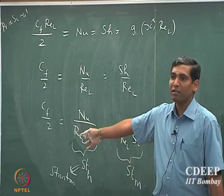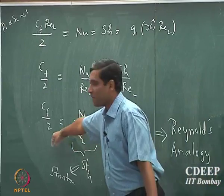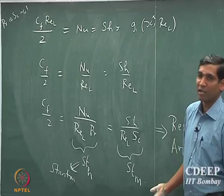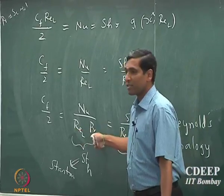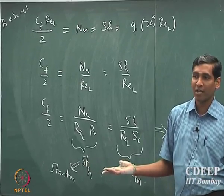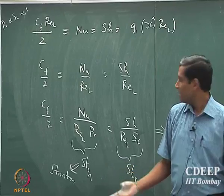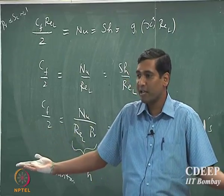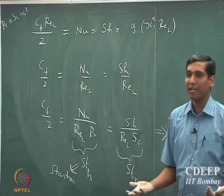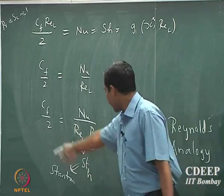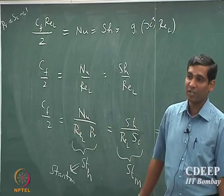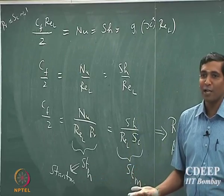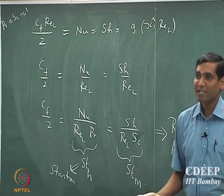If you are able to measure the momentum boundary layer properties and find the friction coefficient, you know the Stanton number and the mass transport Stanton number — all you need to know is the Reynolds and Prandtl numbers, and you are done. Your heat transport coefficient and mass transport coefficient come for free. Reynolds number depends on the properties of the fluid and the length of the plate, while Prandtl number and Schmidt number are essentially properties of the fluid. If you know the properties and can measure any one of these three, the other two come for free.